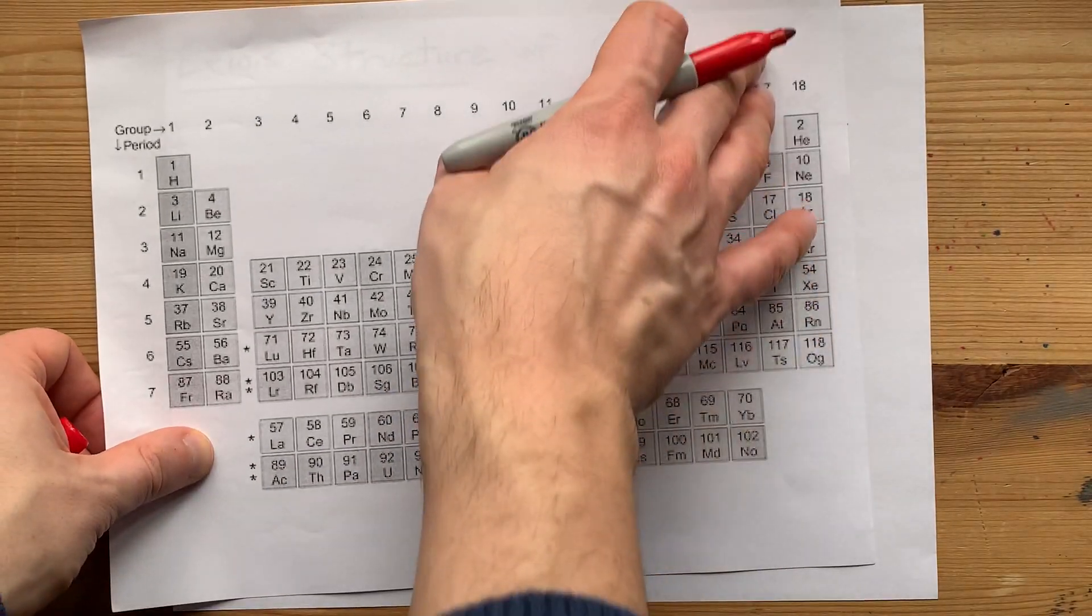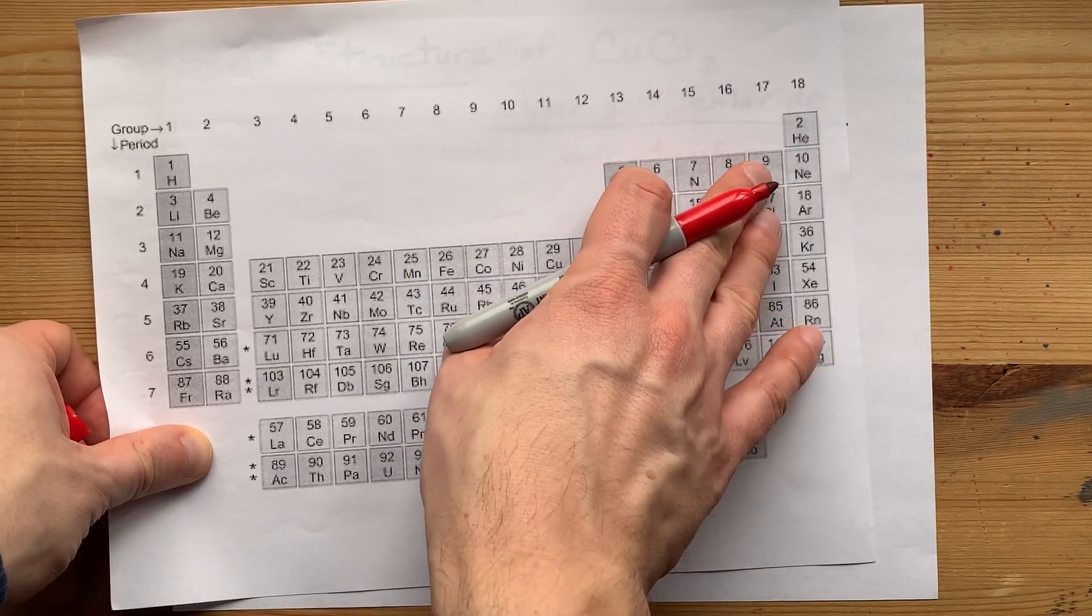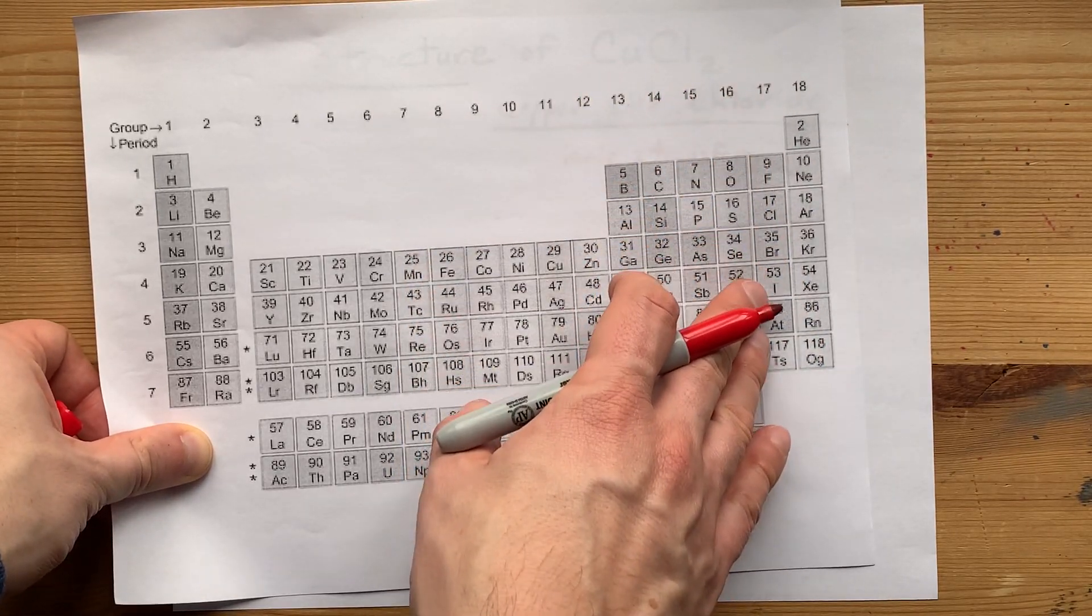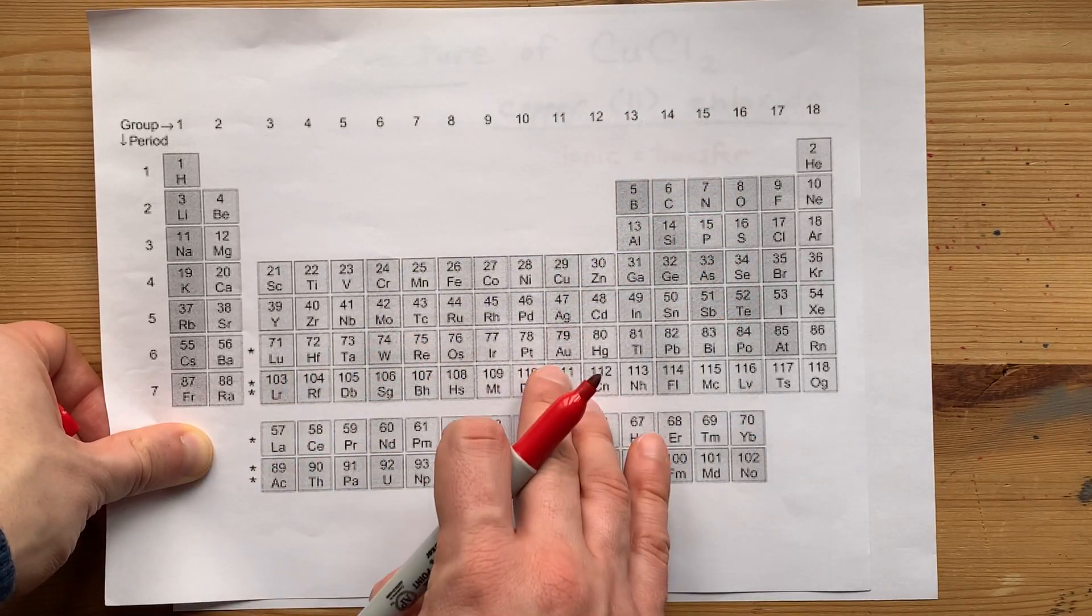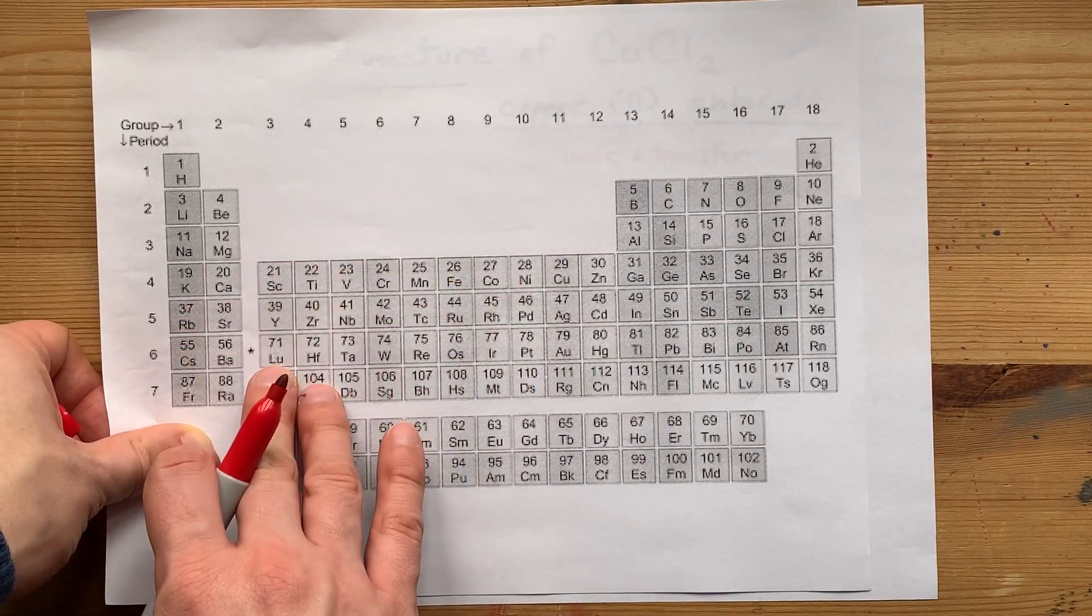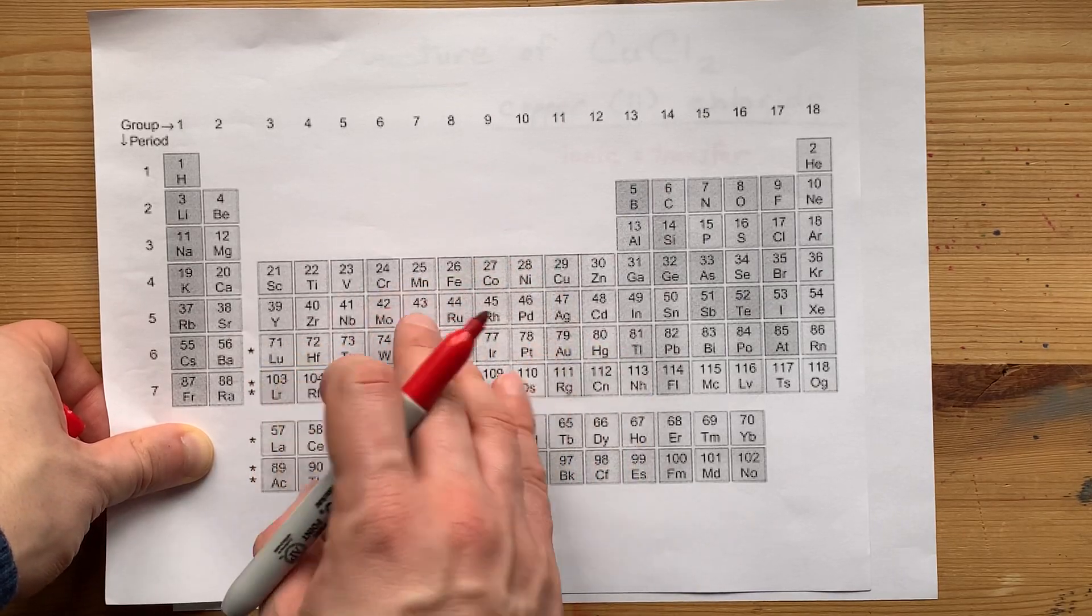For non-metals, it's easy. In group 17, they all bring seven valence electrons. In group 16, they all bring six. But here in the transition metal block, each of these atoms can have more than one charge.